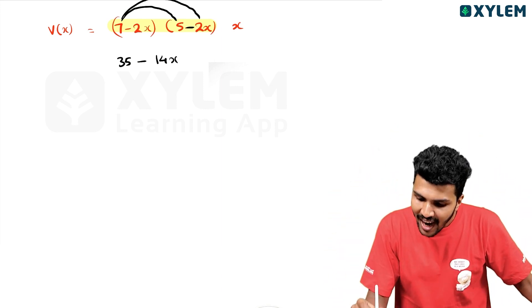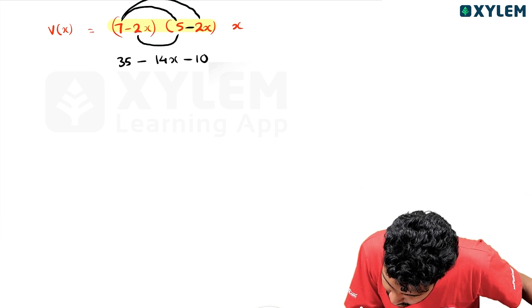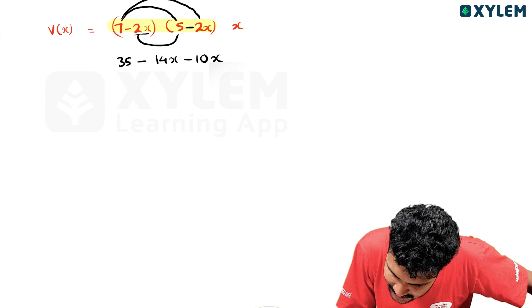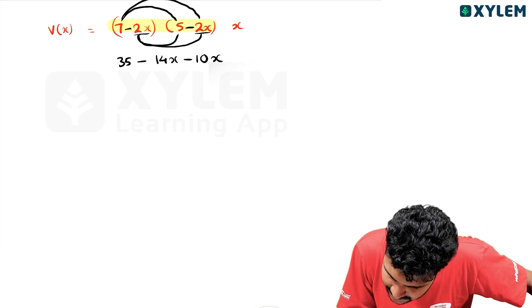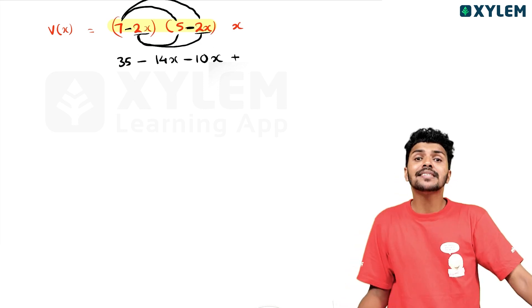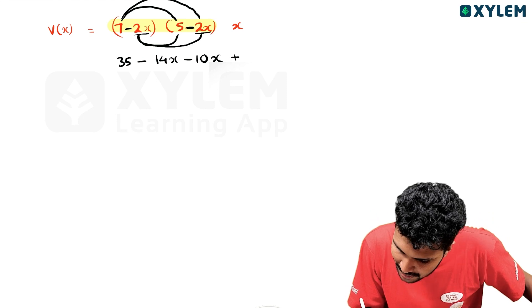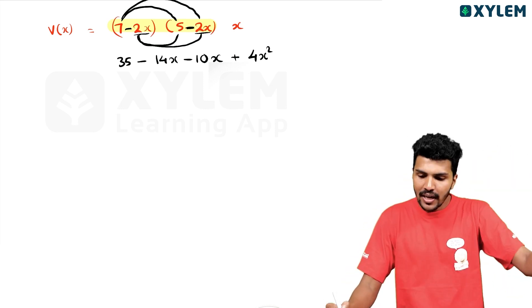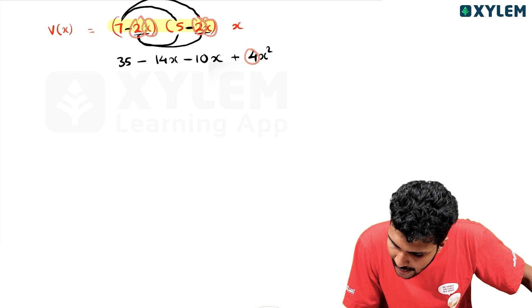7 into 2 is 14. Now, minus 2x into minus 2x — we multiply the same terms. 2x into 2x, 4x into x, x squared. So, 2 into 2 is 4, x into x is x squared.